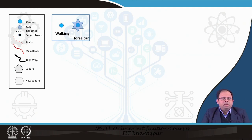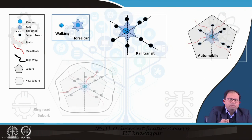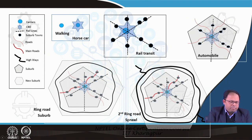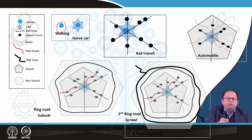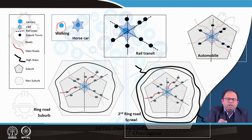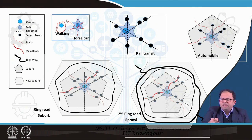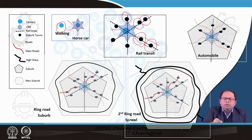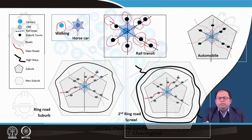This process is explained in the images shown. When cities were small, people used to walk, and the size of the city was also small because everything had to be within walking distance. Then came the horse cart, and along with it certain roads started growing and the city started expanding in different directions. Then came the transit line — railway lines — and along with the central core city area, the city started expanding in the direction of transit corridors, and at station locations new suburb areas were created.